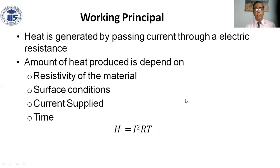Working principle: heat is generated by passing current through electric resistance. The amount of heat produced depends on the resistivity of the material, surface conditions, current supplied, and time. The formula is H = I²RT, where I is current in amperage, R is resistivity of the material, T is time, and H is total heat.